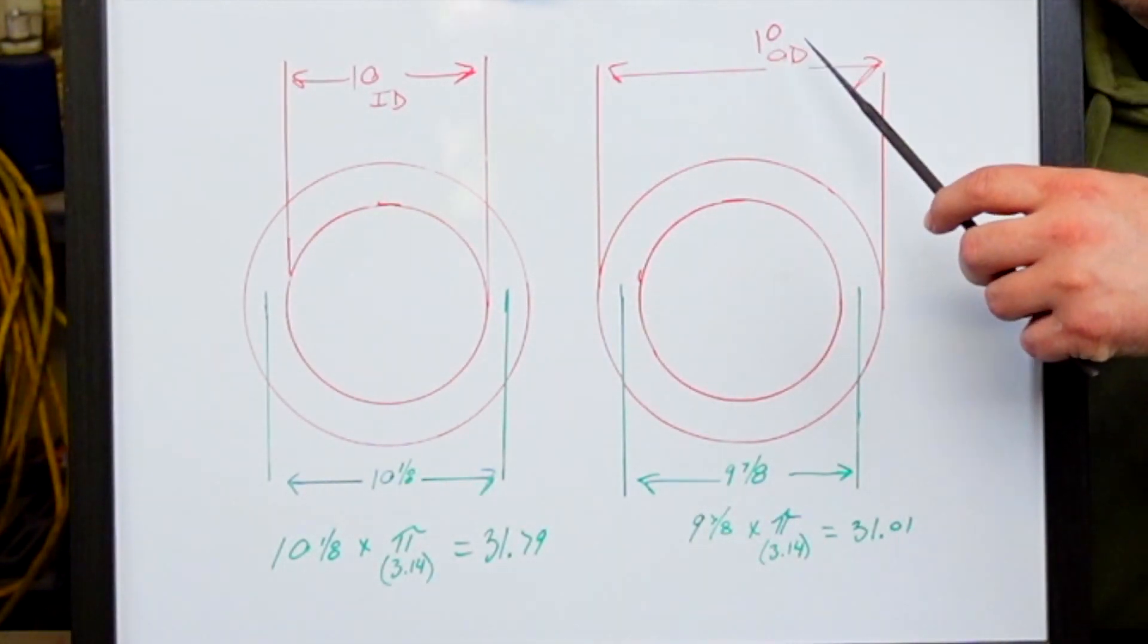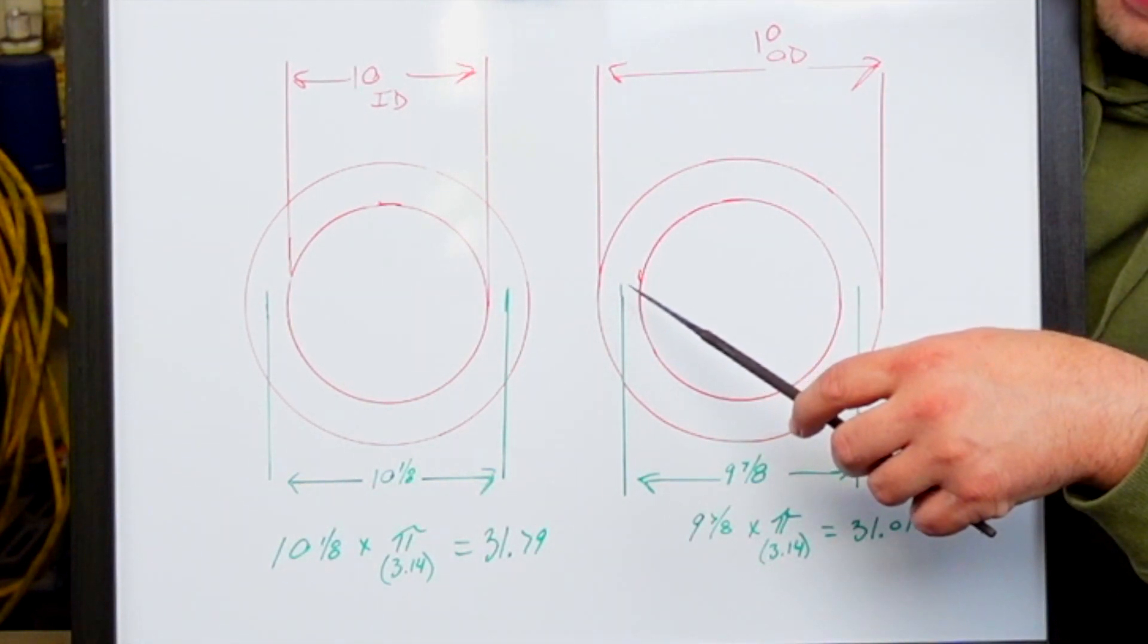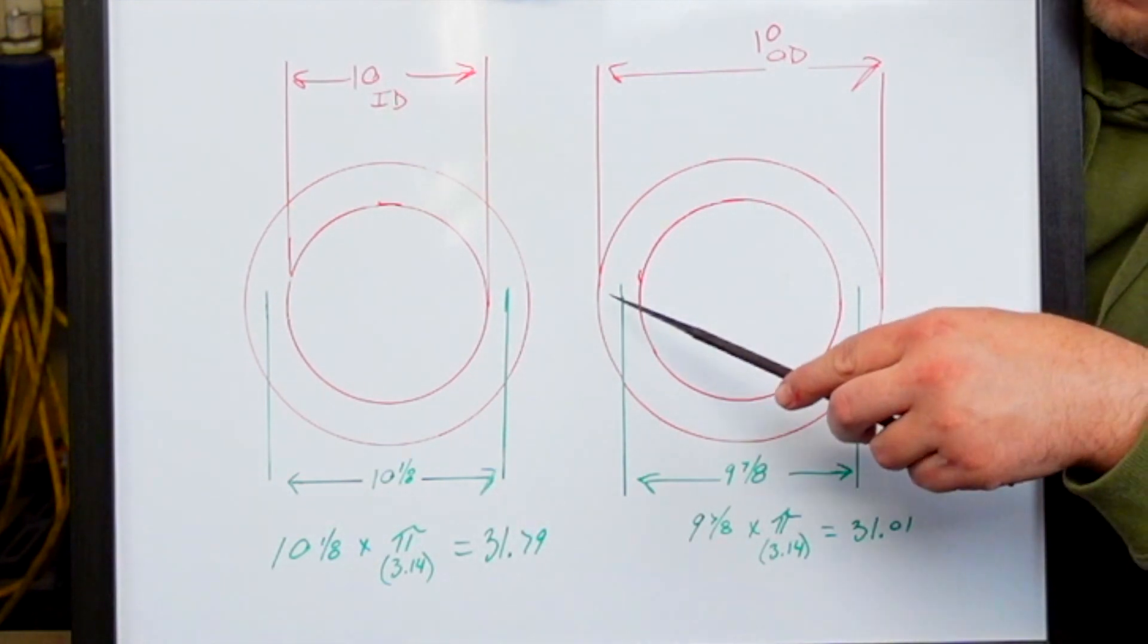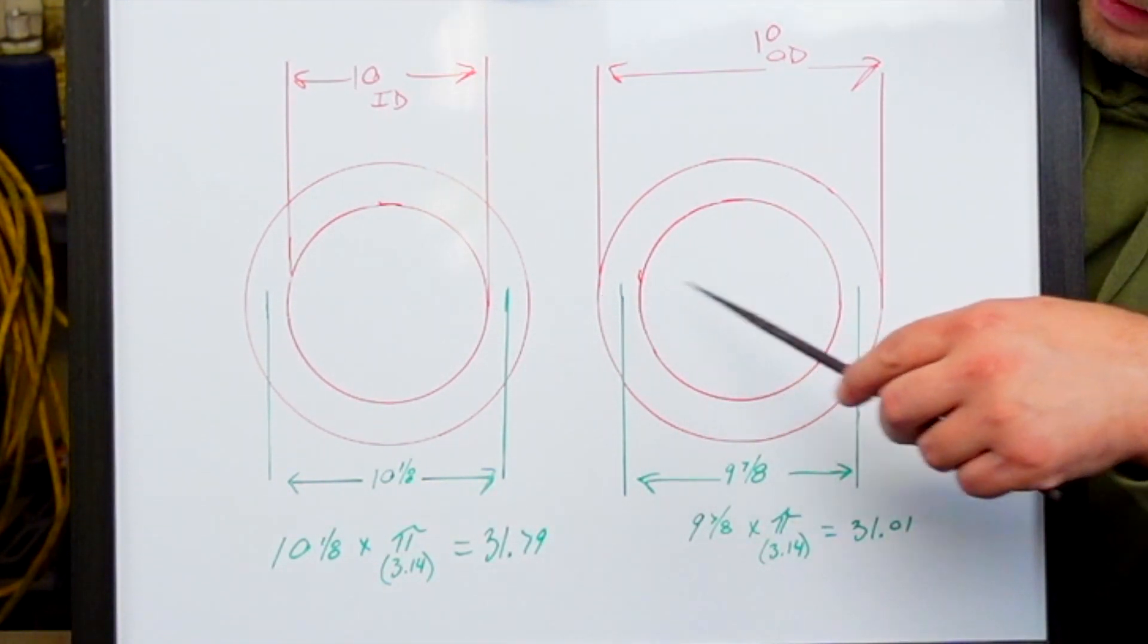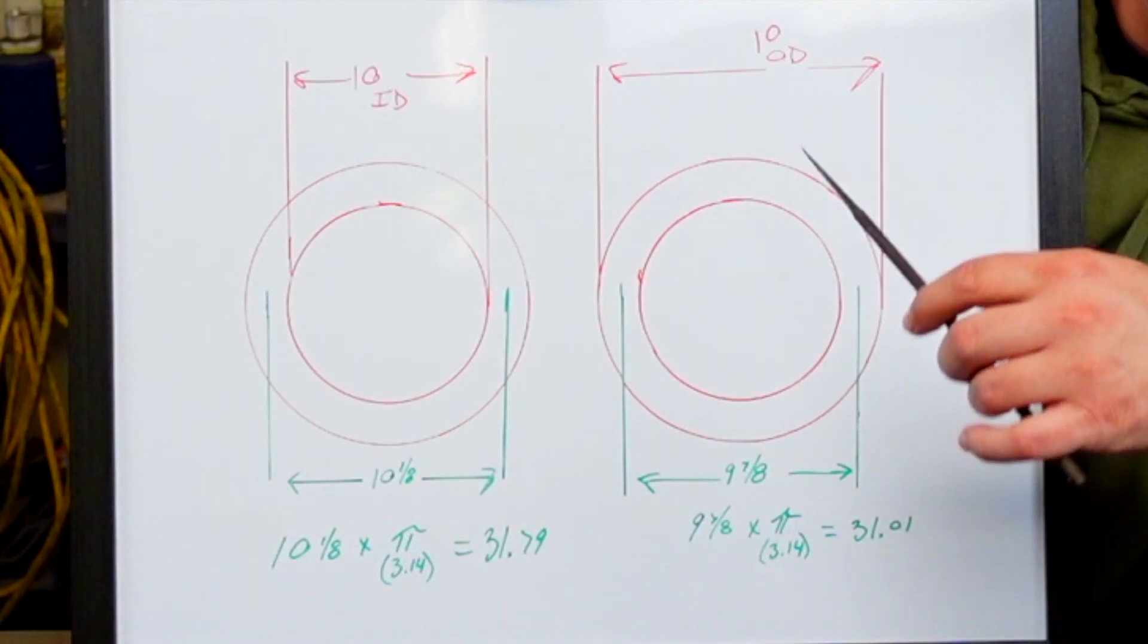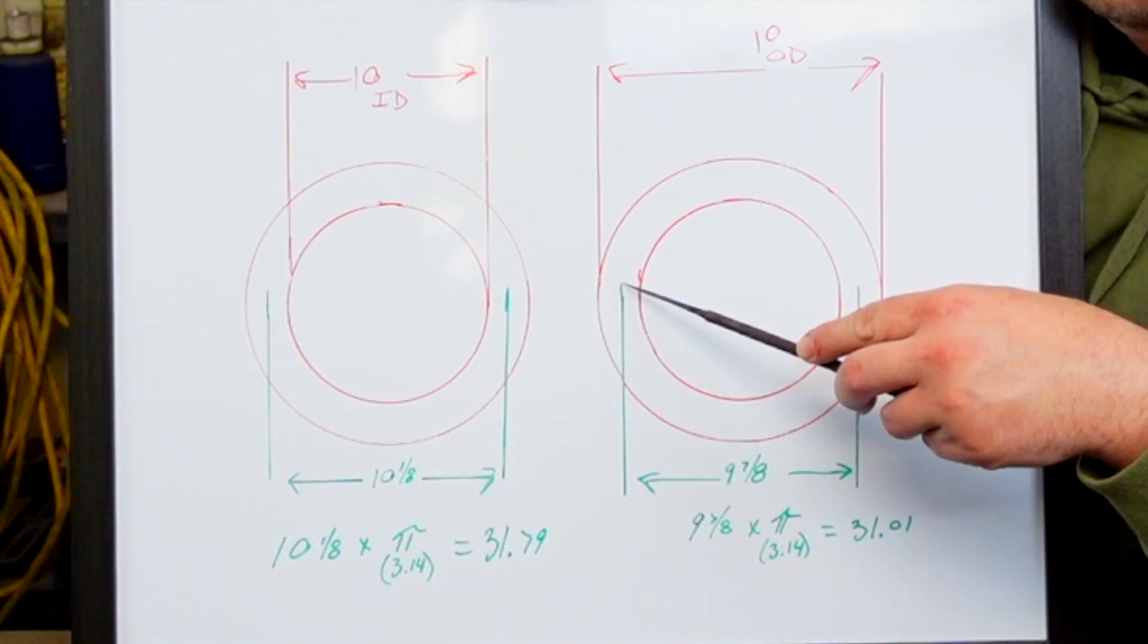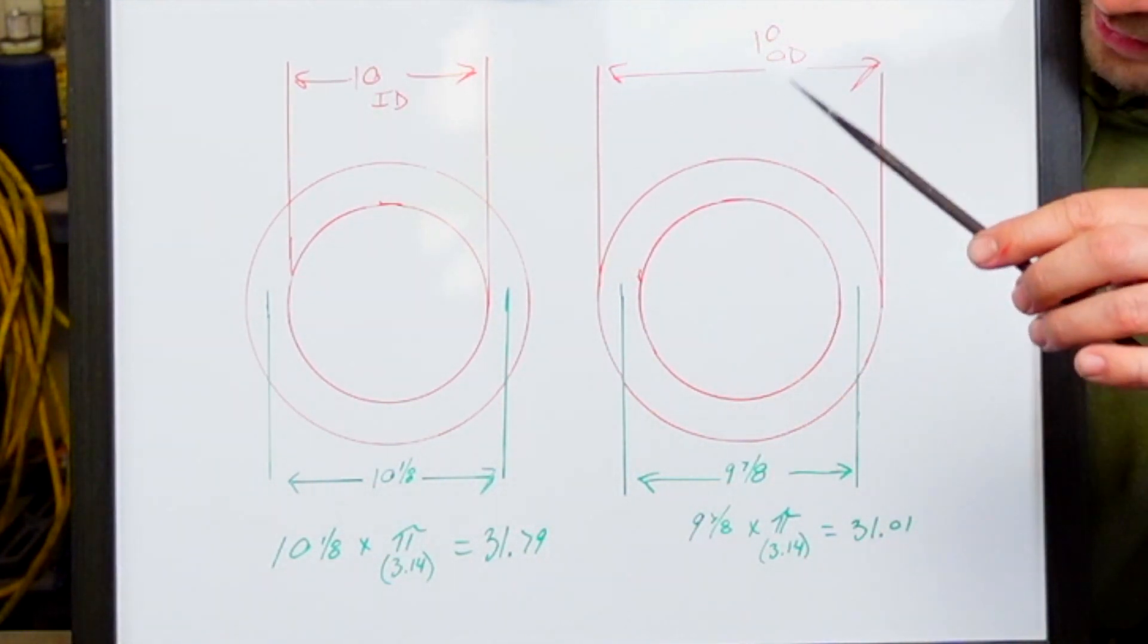Same thing except in reverse, 10-inch OD, and so we need to figure where our neutral axis is to get our stretch out, which will be subtracting a sixteenth on this side and a sixteenth on this side because we're using eighth-inch material, and we want them to go right through the center of that material.